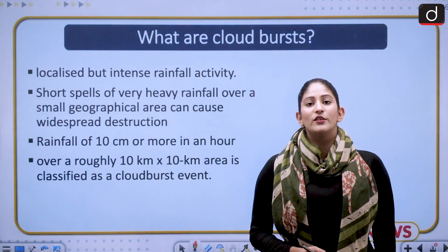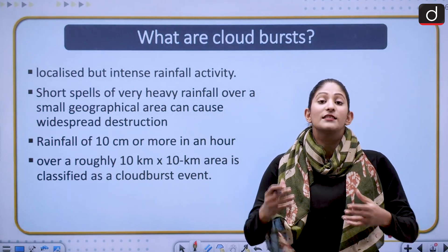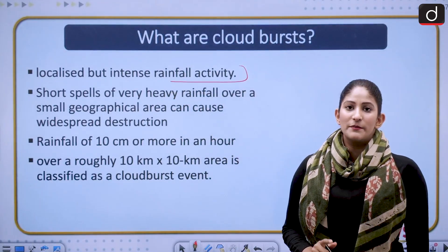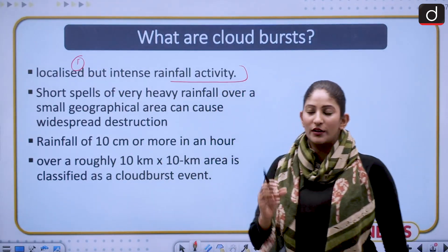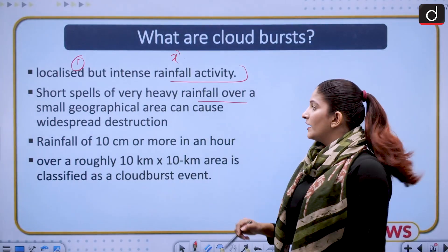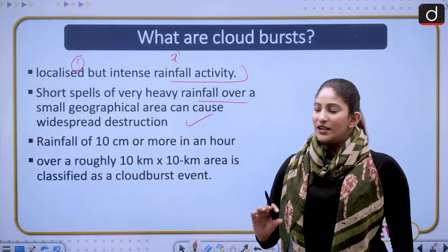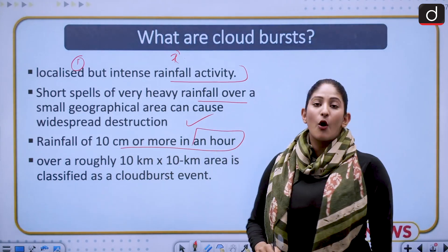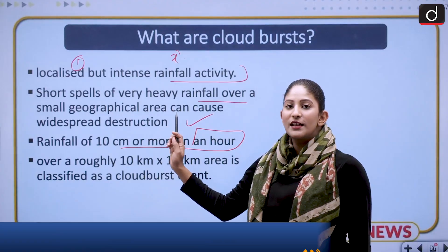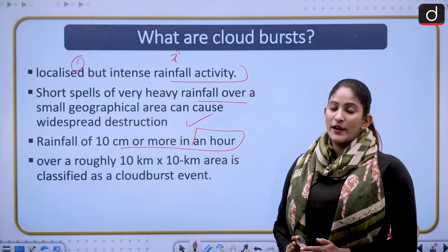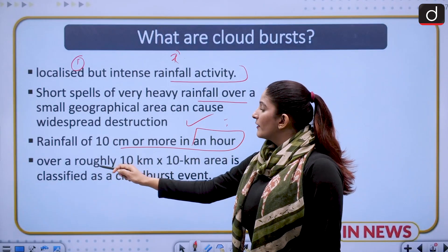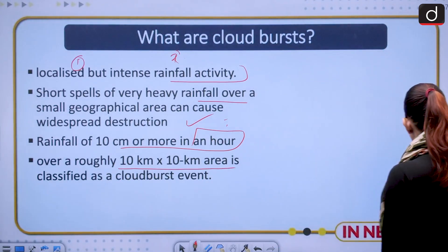First, let's understand what cloudbursts are. A cloudburst is not a sudden bursting of a cloud, but rather a localized yet intense rainfall activity. It is local in nature — restricted to a smaller area — and the rainfall is intense. Generally, rainfall of 10 cm or more in one hour, or 5 cm in half an hour, over roughly a 10×10 km area can be termed a cloudburst.